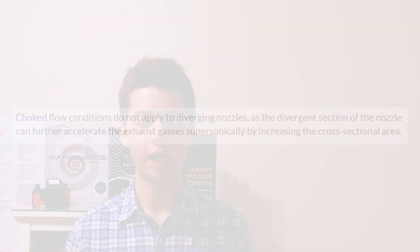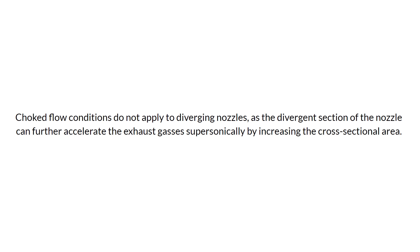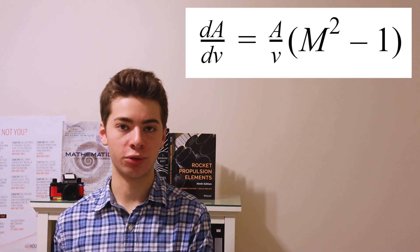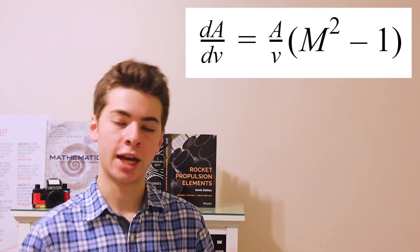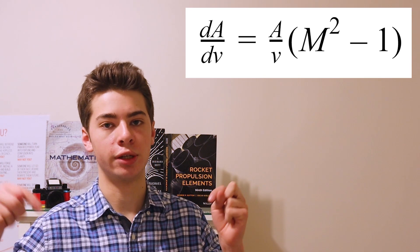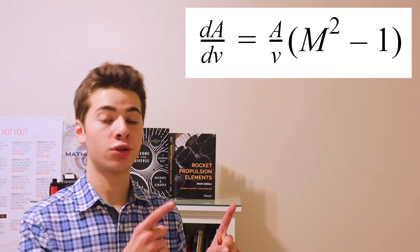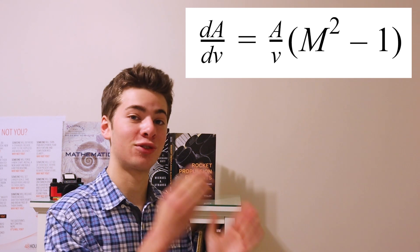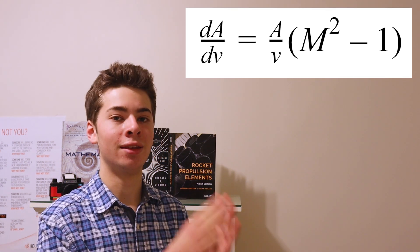And then surprisingly, in the diverging section, it can go to supersonic speeds. This is because the diverging section of the nozzle can further accelerate the exhaust gases supersonically by increasing the cross-sectional area. This next equation actually builds on the continuity equation in cases where the flow is supersonic, and can be used in any situation. It is simply the derivation of many isentropic variables, which you can find in the description down below if you're interested. This equation beautifully explains mathematically why the exhaust actually speeds up in the diverging section.